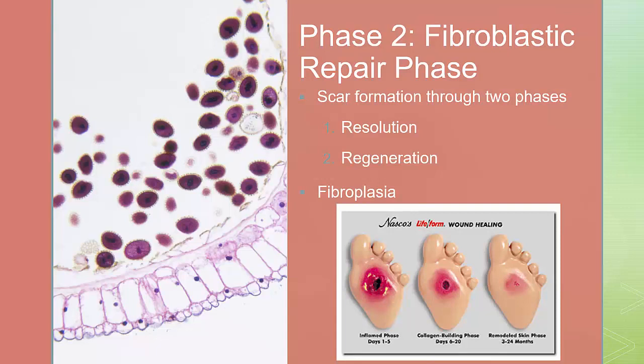In phase 2, the fibroblastic or repair phase, the proliferation phase occurs from day 3 to 21. During this phase, the development of new blood vessels or angiogenesis occurs. Scar formation occurs through two phases: resolution, which may indicate that there was little tissue damage and normal restoration of tissues, or through regeneration, which is the replacement of tissue by the same tissue. Fibrous tissue or fibroplasia also occurs and the generation of new epithelial cells or re-epithelization occurs. Typically, individuals will complain of pain and tenderness that gradually subside during this period.